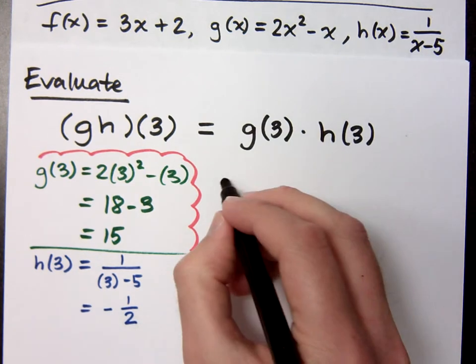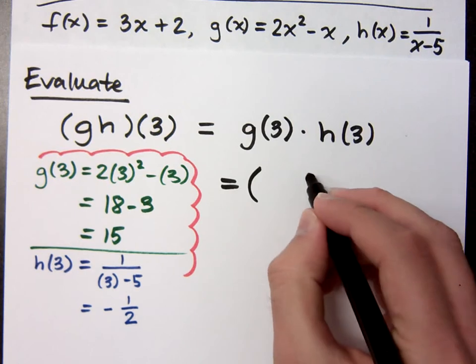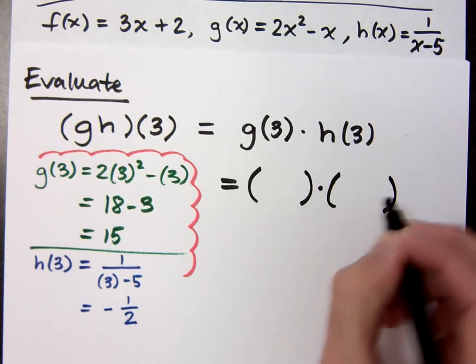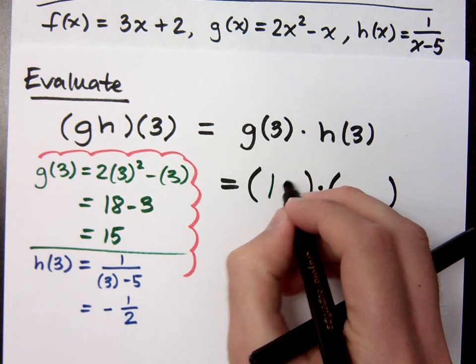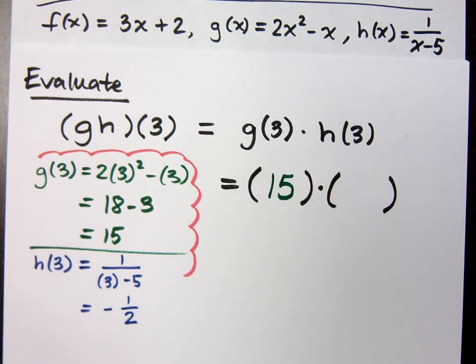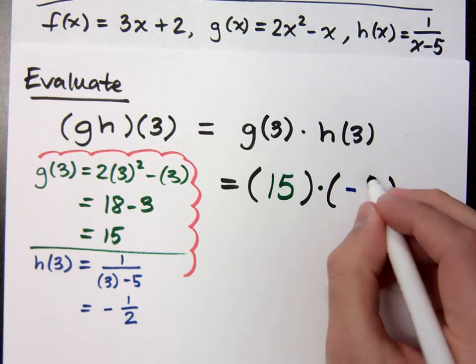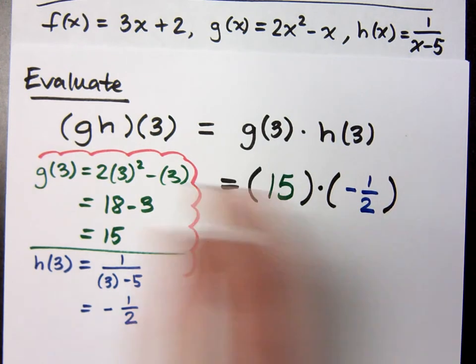So when I look at what I'm working with here, I've got g of 3 times h of 3. What's g of 3? 15. And h of 3 is negative 1 half.